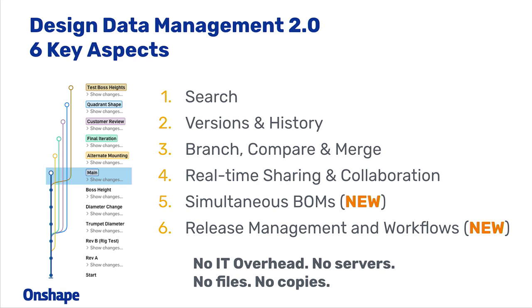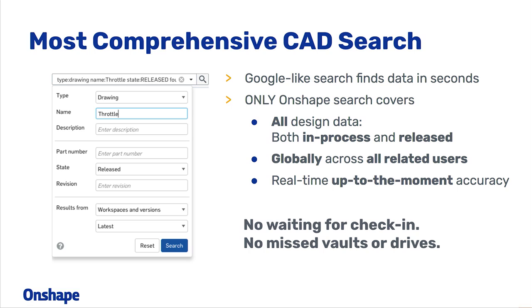I want to cover six key aspects of design data management. The first four are things that we've already delivered to our customers, and I'm going to do a quick review, and then I'll show you the key new things in five and six — the new things we're announcing today. Everything you're going to see here is like everything in Onshape: it happens fully in the cloud. There's no IT overhead, no servers to install, no files to copy. You can put that time back into designing great products.